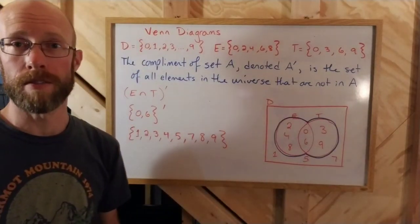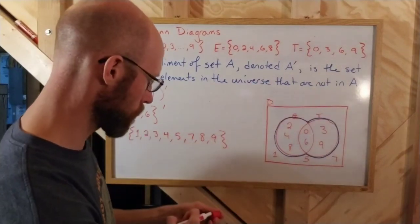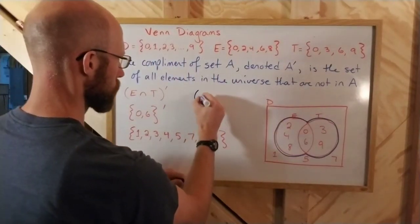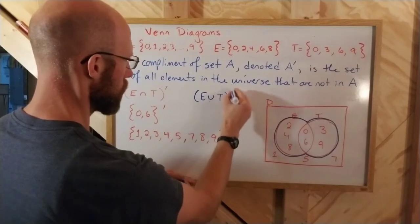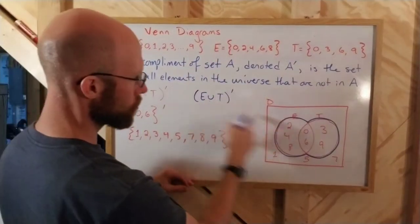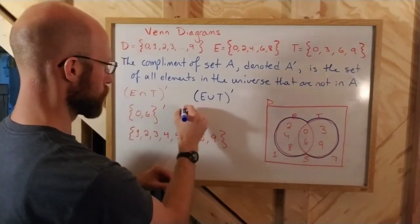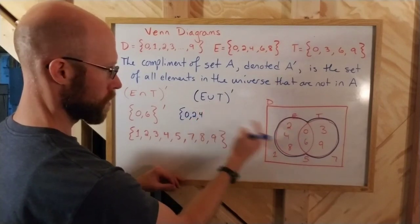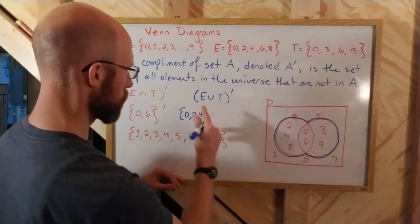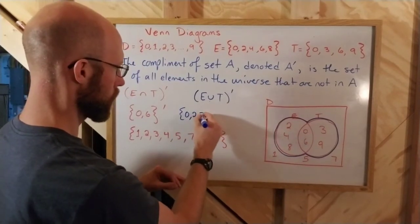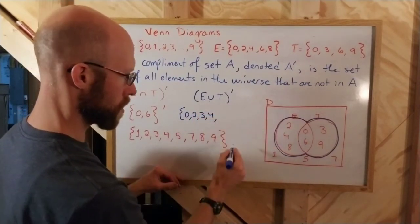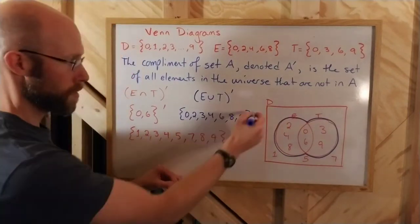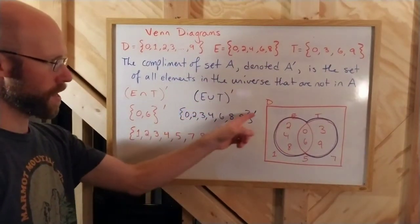We can also do the complement of the union, right? The complement of the union. In fact, I already have the union traced out in blue here. So let's look at that one. Let's look at E union T complement. Well, of course, the union is all the stuff inside that blue set there. That would be 0, 2, 3, 4, 6, 8, 9. I'll keep these in order if I can. But we want the complement of that. So the union is this set. Then we want its complement.